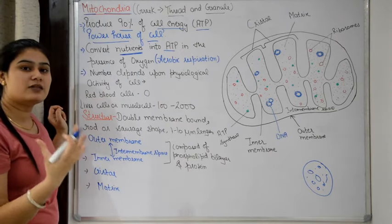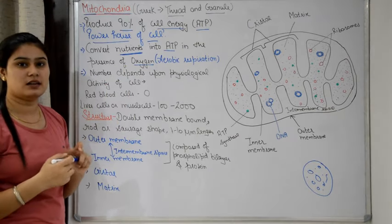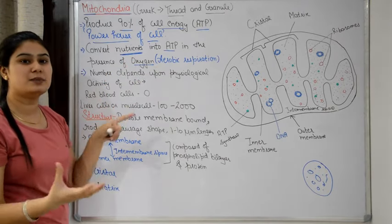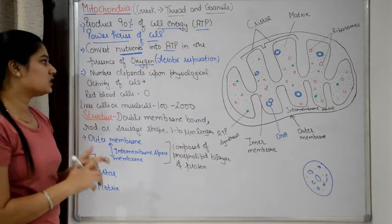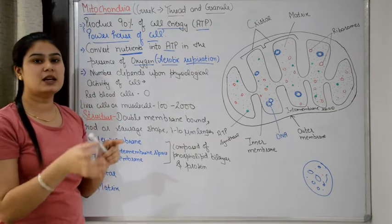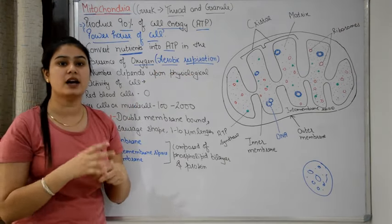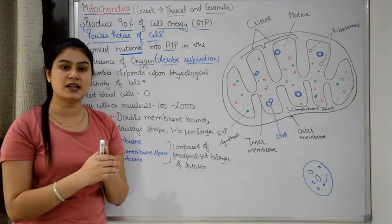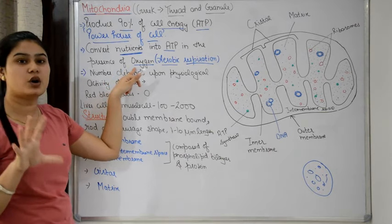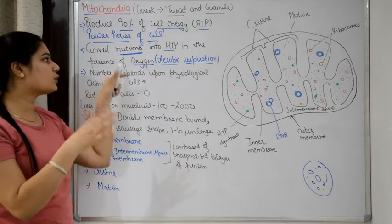This conversion happens in the presence of oxygen. In the presence of oxygen, mitochondria converts nutrients into energy. This process is called aerobic respiration — 'aerobic' means in the presence of oxygen. So in aerobic respiration, the nutrients we take are converted into energy. The presence of oxygen is very important for mitochondria; if there is no oxygen, this process will not happen.